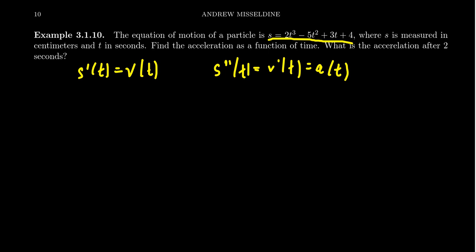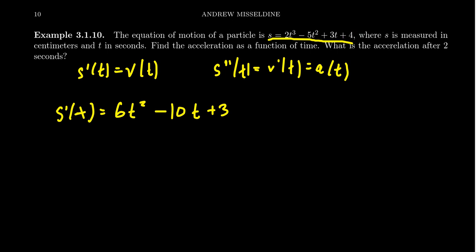To compute the second derivative, we first have to compute the first derivative. Using the linearity properties of the derivative and the power rule, we end up with 2 times 3, which is 6 times t squared. We lower the power by 1, then minus 5 times 2, which is 10 times t. We lower the power by 1 again. The next term gives us plus 3 when we take the derivative, and the derivative of a constant just disappears. This is the first derivative, which gives us the velocity function.